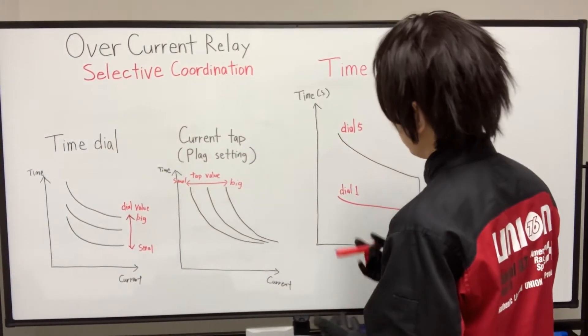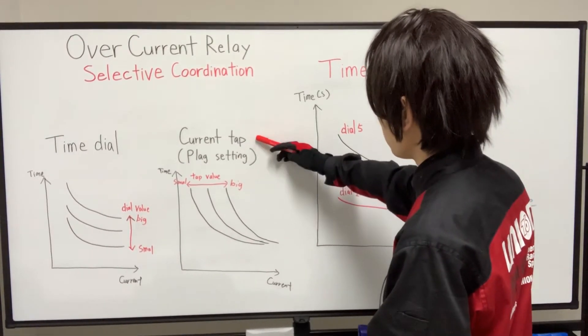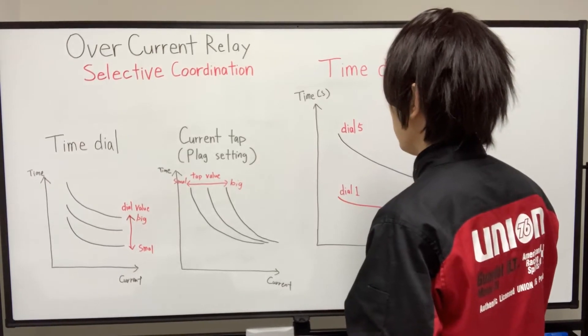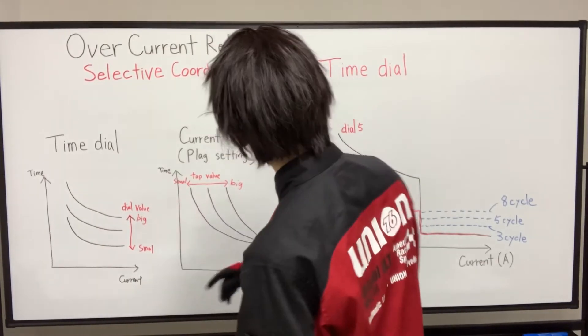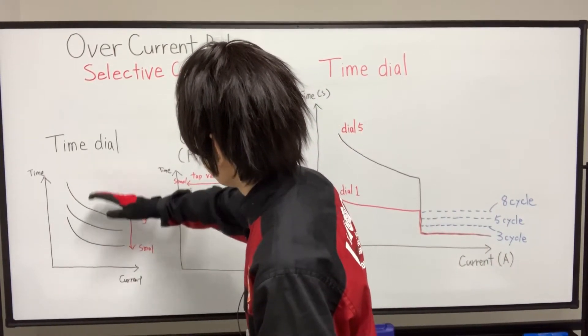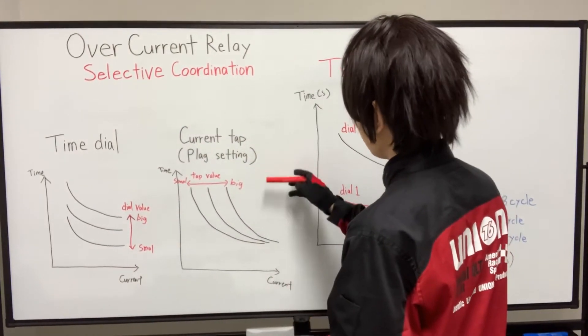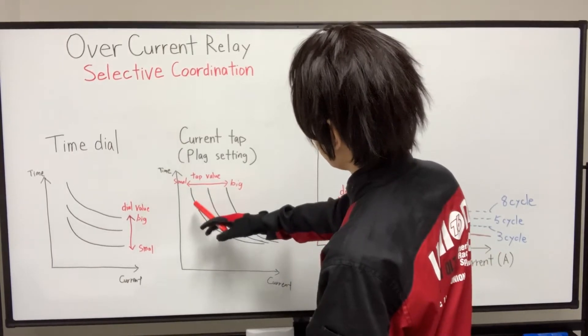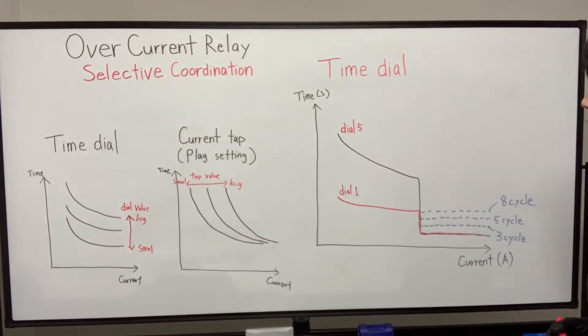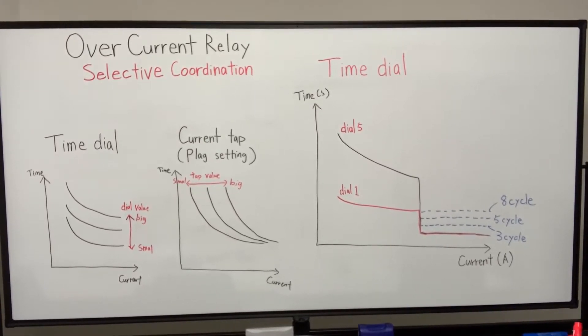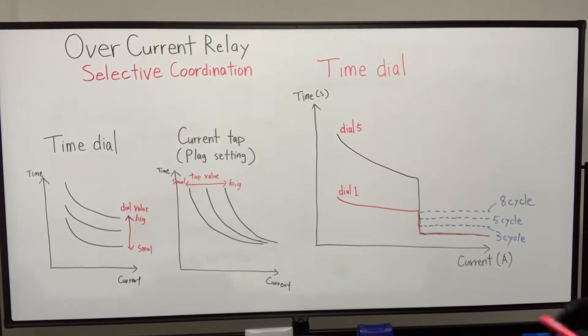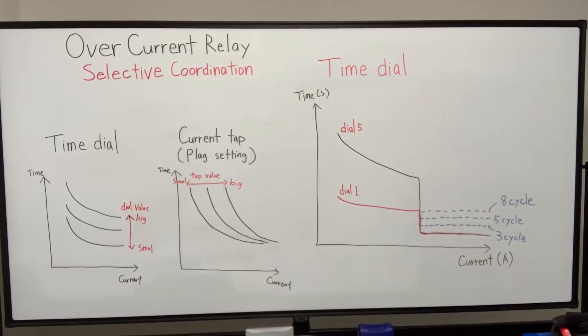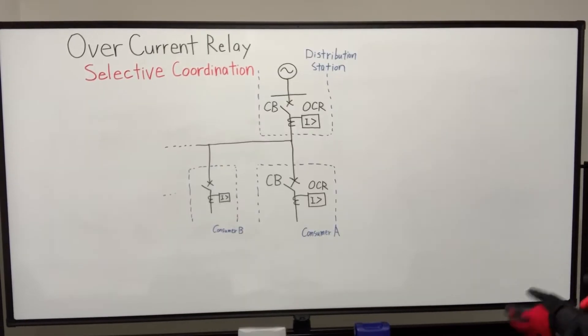This time dial and this time dial. We will learn another adjustment function which is called current tap, also called plug setting. And time dial can arrange just like this, this curve. And current tap is adjustment something like that. We will get the detail later. So now just please make sure this characteristics, time-current characteristics, are adjustable by some functions of overcurrent relay.